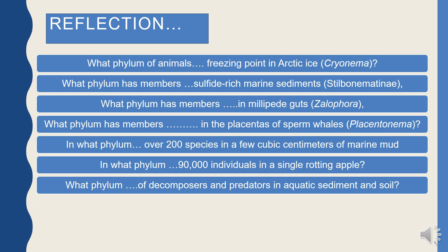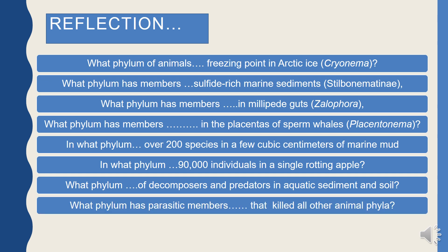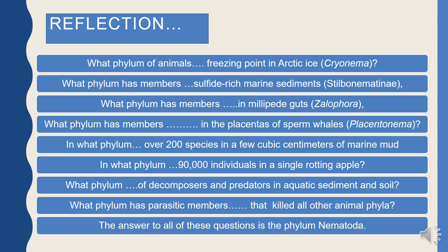This phylum includes decomposers, predators, parasites, free-living forms, and scavengers. Which phylum is parasitic in nature and found in all other animals in the same way? The answer to all of these questions is Phylum Nematoda. Phylum Nematoda is found in frozen Arctic ice, high-sulphide marine environments, millipede guts, sperm whale placenta, marine mud, and rotting apples.